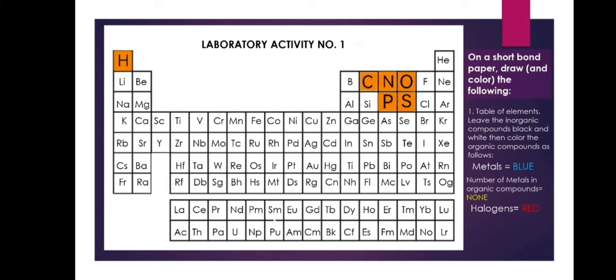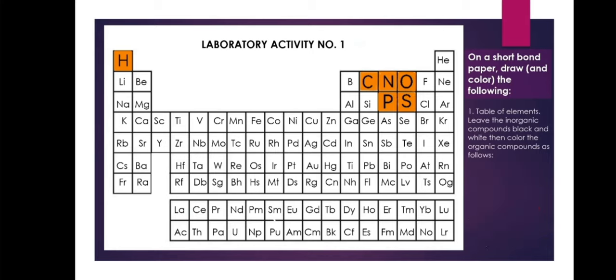Halogens should be colored red, but again, the number of halogens in organic compounds is none. Your activity should have looked like this — you should have colored orange for the six elements mentioned earlier. The only things that should be colored on your activity are hydrogen, carbon, nitrogen, oxygen, phosphorus, and sulfur, and those should be colored orange.